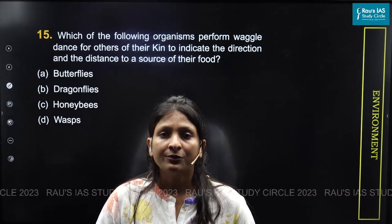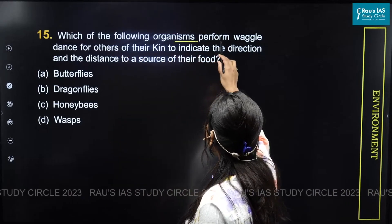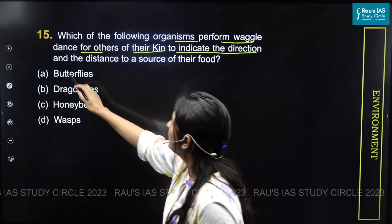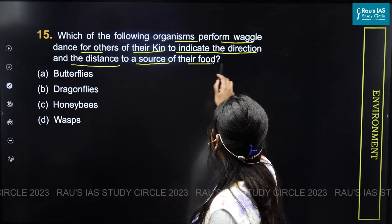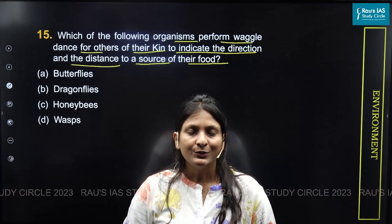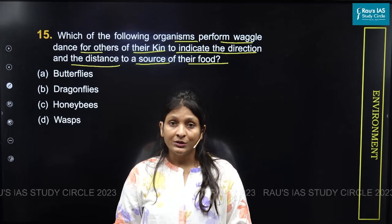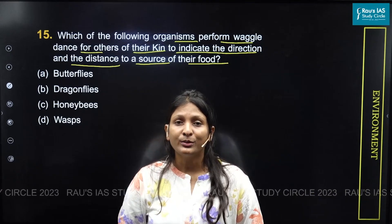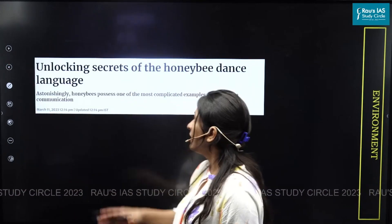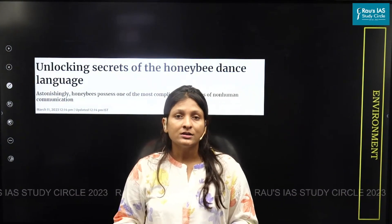Let us discuss question number 15 from the environment section. The question says: which of the following organisms performs wiggle dance for others, to their kin, to indicate the direction and the distance to a source of their food? At first glance the question seems very factual, but UPSC asked this because wiggle dance was in the news, appearing in The Hindu dated 11th March 2023. The article was titled 'Unlocking the Secret of the Honeybee Dance Language.'